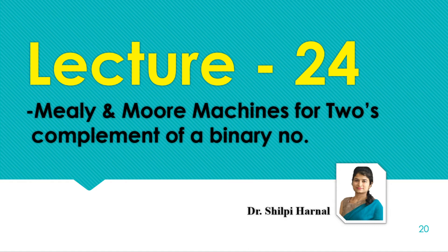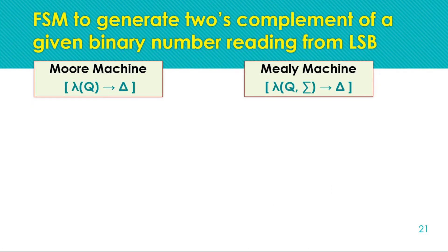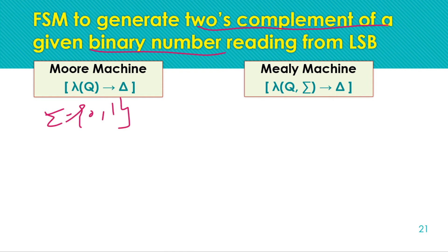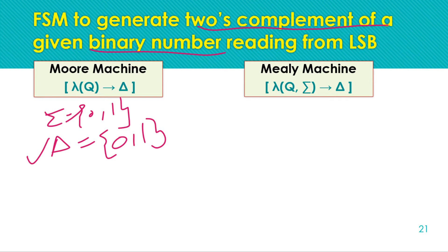The problem is to generate the two's complement of a given binary number. The input symbols are zero and one, and as we need to generate the two's complement of a given binary number, the output symbols are also zero and one. So the output comprises zero and one only.